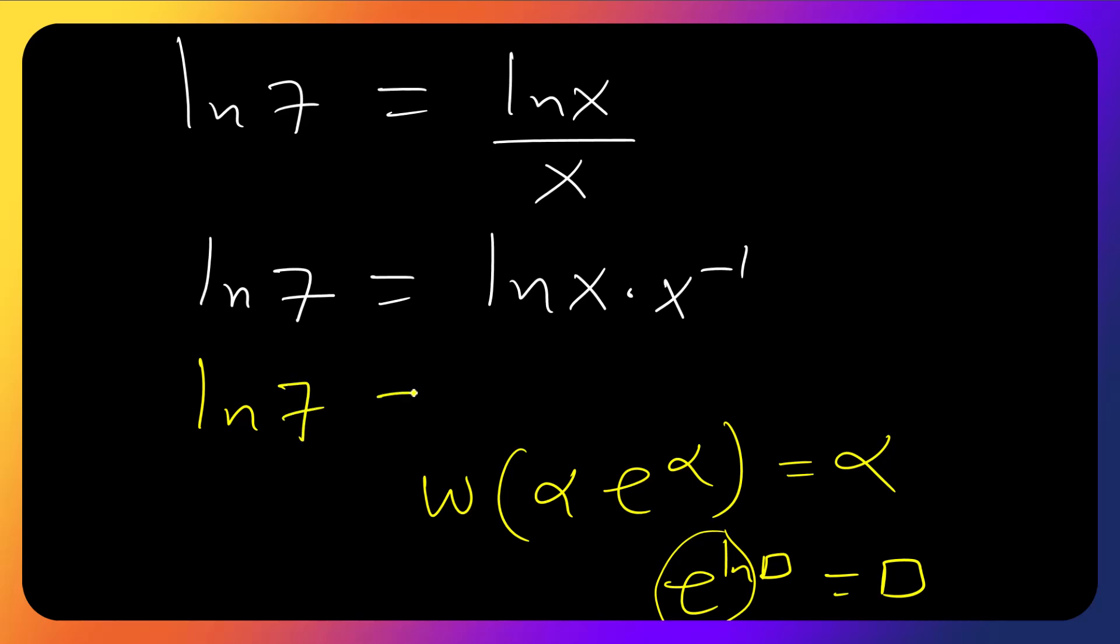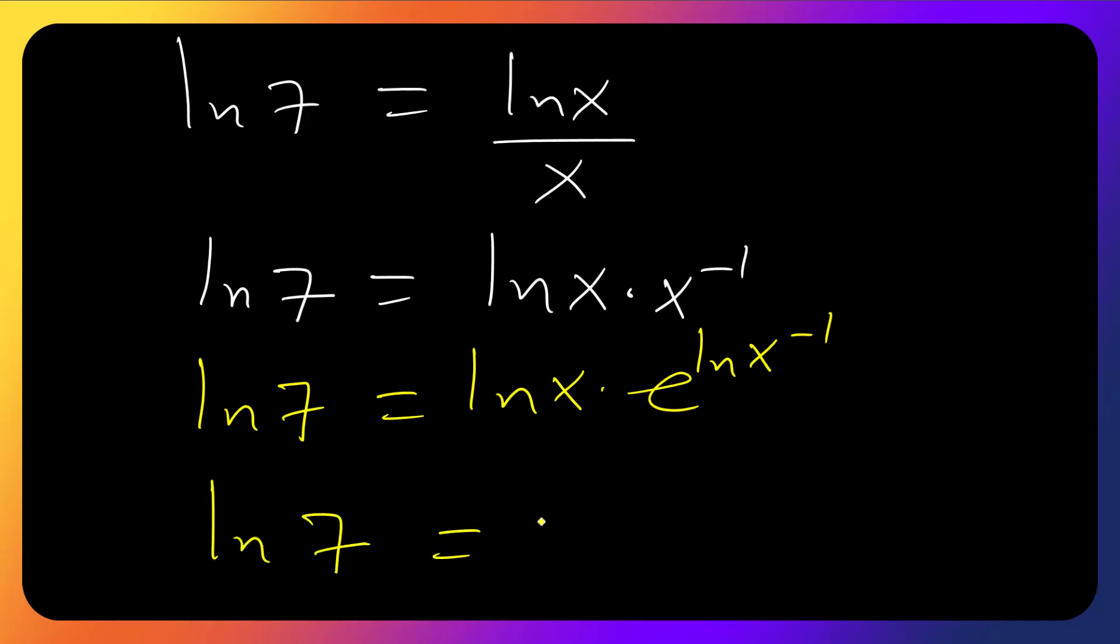We have this equals ln x. This side will be e raised to ln x to the power minus 1. So ln 7 is the same as ln x. This one is to the power minus ln x.